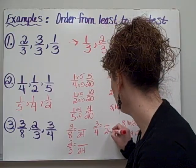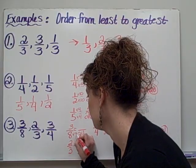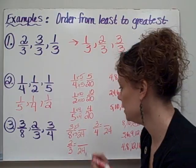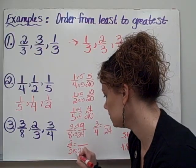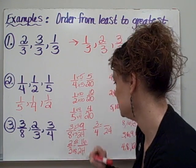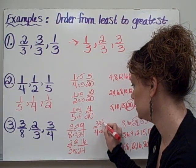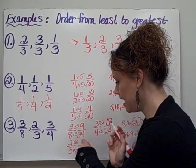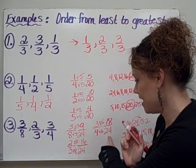Now I create my equivalent fractions. I ask myself, how do I get from 8 to 24? Well, we multiply by 3. Whatever I do to one number, I must do to the other. 3 times 3 equals 9. How do I get from 3 to 24? I multiply by 8. Whatever I do to the bottom, I must do to the top, and 2 times 8 is 16. And how do I get from 4 to 24? I multiply by 6. Do the same to the top and get 18. So now instead of 3/8, I have 9/24. Instead of 2/3, I have 16/24. And instead of 3/4, I have 18/24.